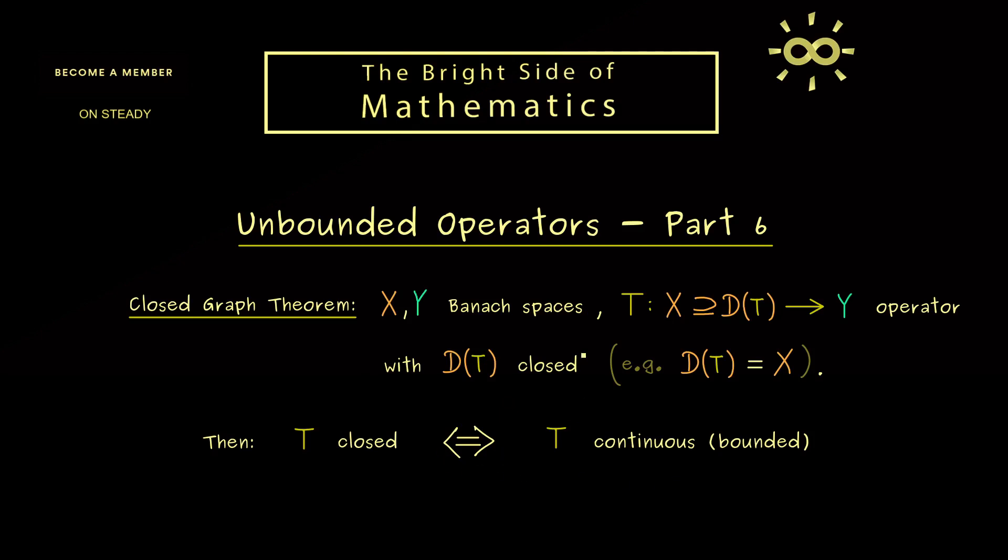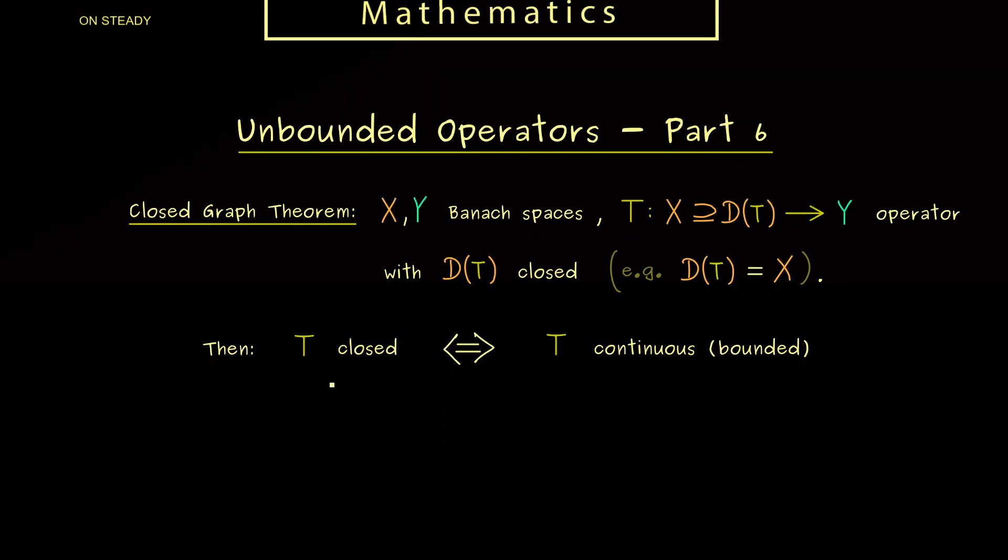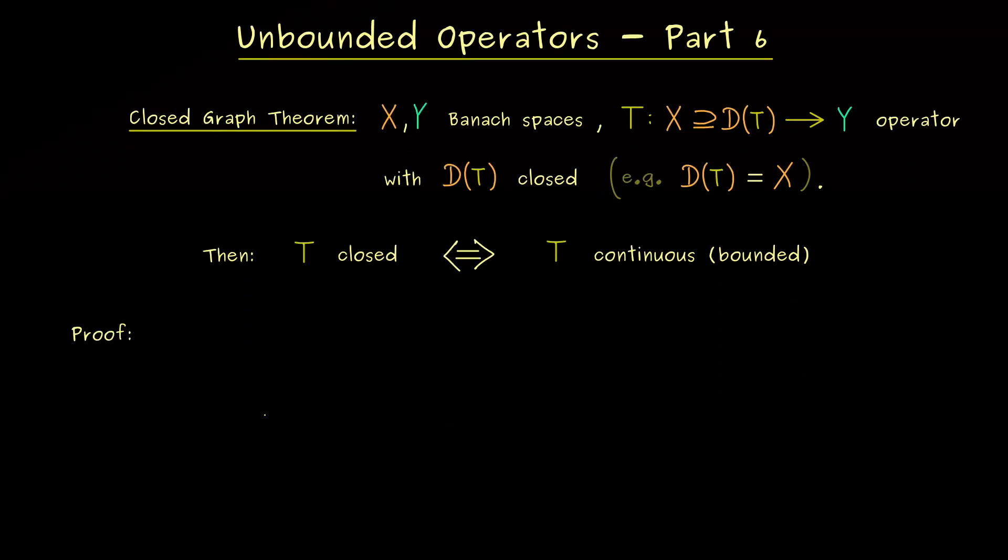Then I would say let's immediately write down a proof for this nice fact. And since we have an equivalence we want to show here, we need to write down two directions. And I would say we start with the easy one, which means we go from a bounded operator to a closed operator.